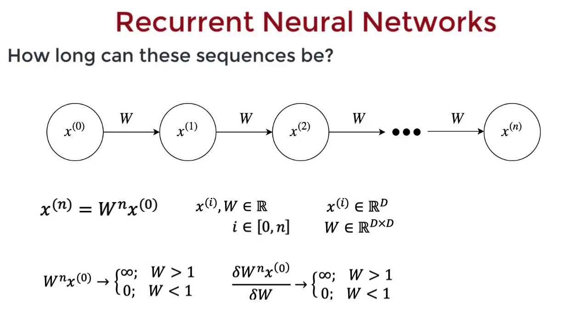We could generalize this to matrices as well. Xt could be a vector, and w could be a matrix transformation.